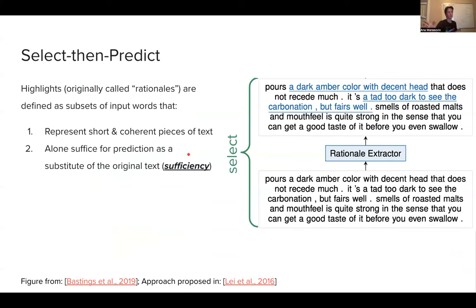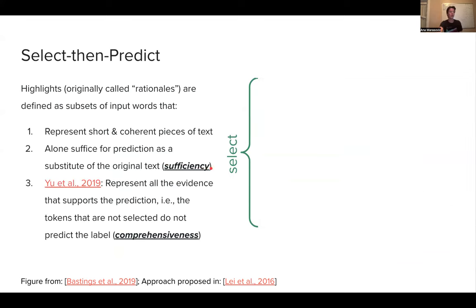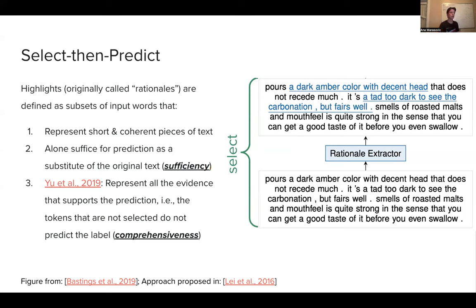All right. I think we all know this by now, but highlights original core rationales have defined a subset of words that represent short and coherent pieces of text and alone sufficient suffice for prediction as a substitute of the original text, which we call sufficiency. And in a follow-up paper, there was another property that was mentioned that we know by now, and that's that the highlight that we have extracted represent all the evidence that supports the prediction that these tokens that are not selected do not predict the label.